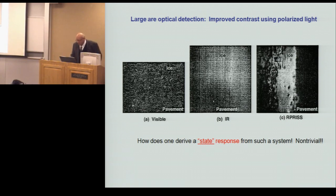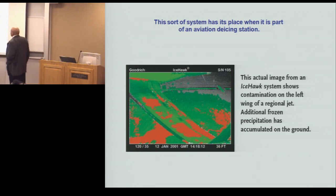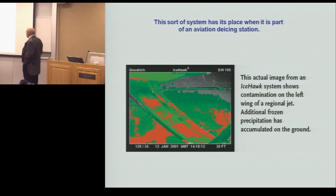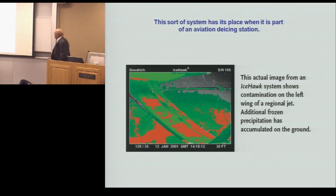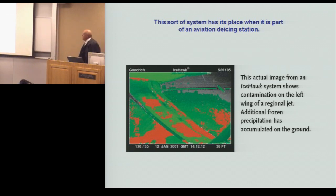Although we're using fairly sophisticated signal processing, we're able to take the data and reduce it to essentially a binary response that can either activate signage or notify maintenance personnel. Another example is the so-called Ice Hawk system, which has been used on aircraft as they depart to determine whether or not there's a need for additional application of de-icing chemicals — another camera-based technology.